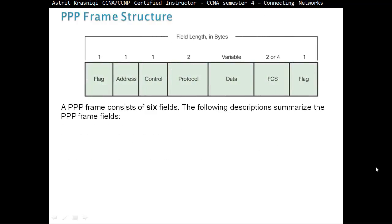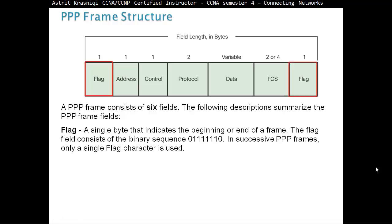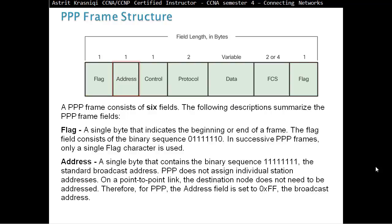PPP frame structure. A PPP frame consists of six fields. The following description summarizes the PPP frame fields. Flag, a single byte that indicates the beginning or the end of the frame. The flag field consists of the binary sequence number 0, 6 ones, and then a 0. In successive PPP frames, only a single flag character is used.